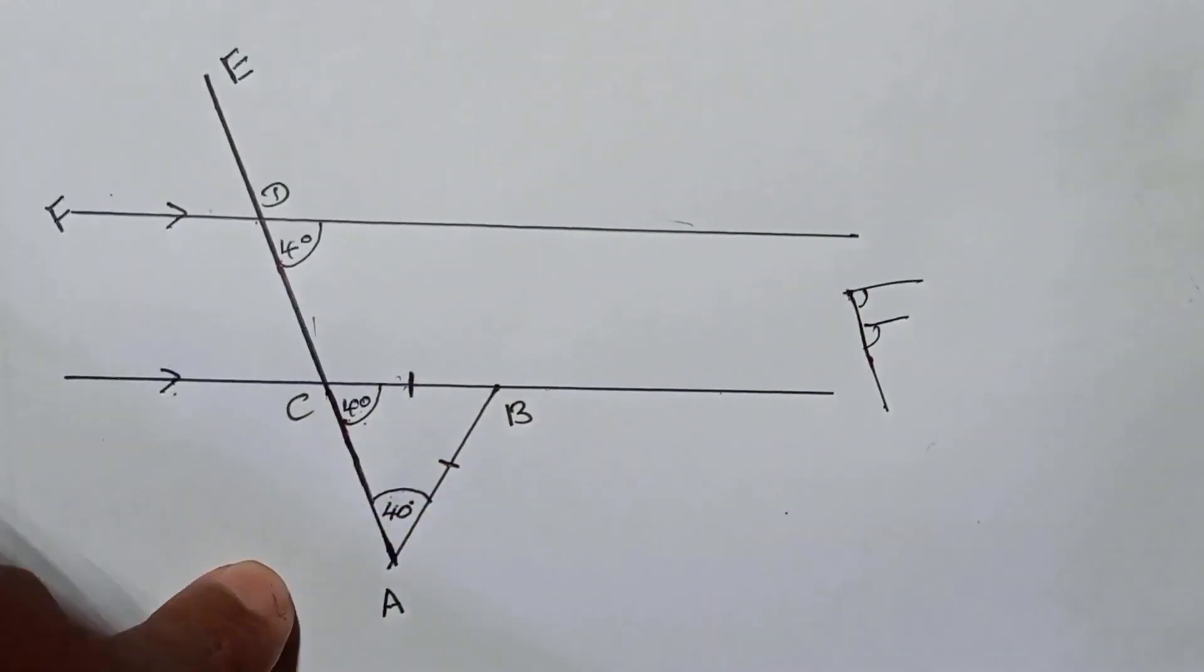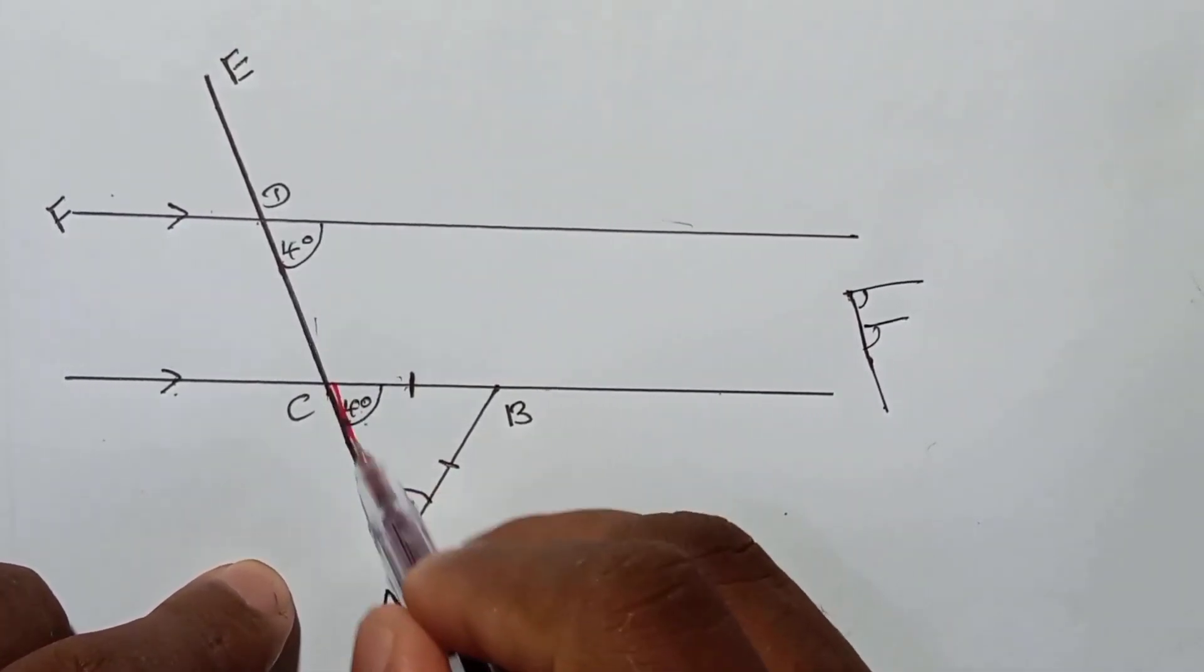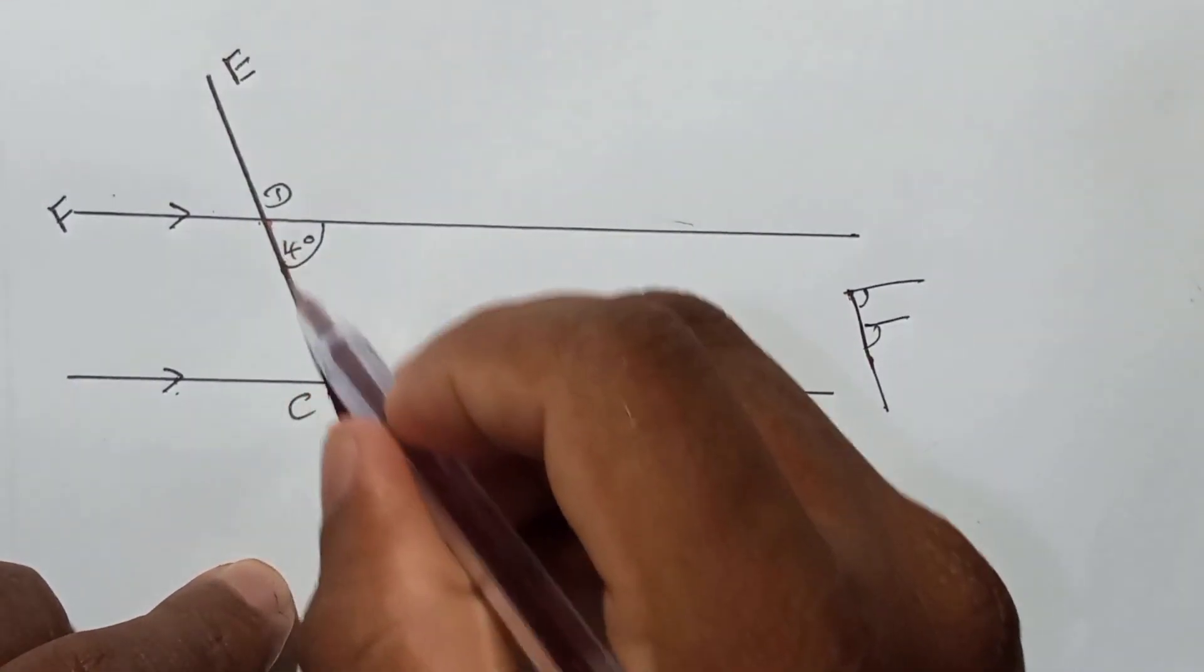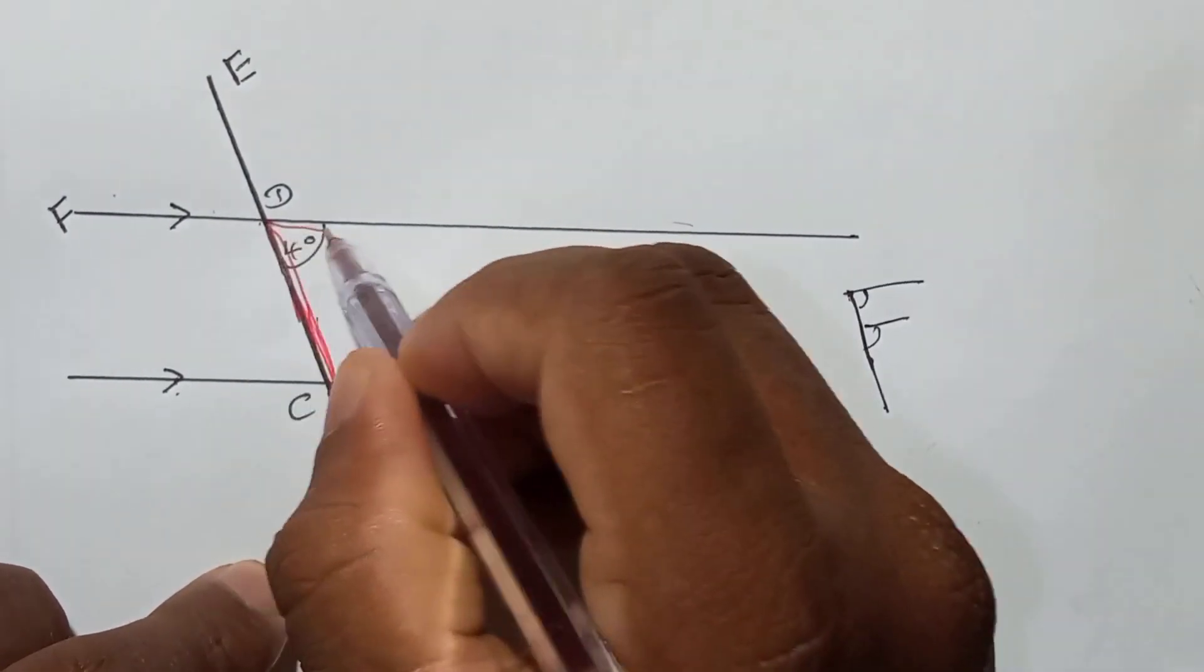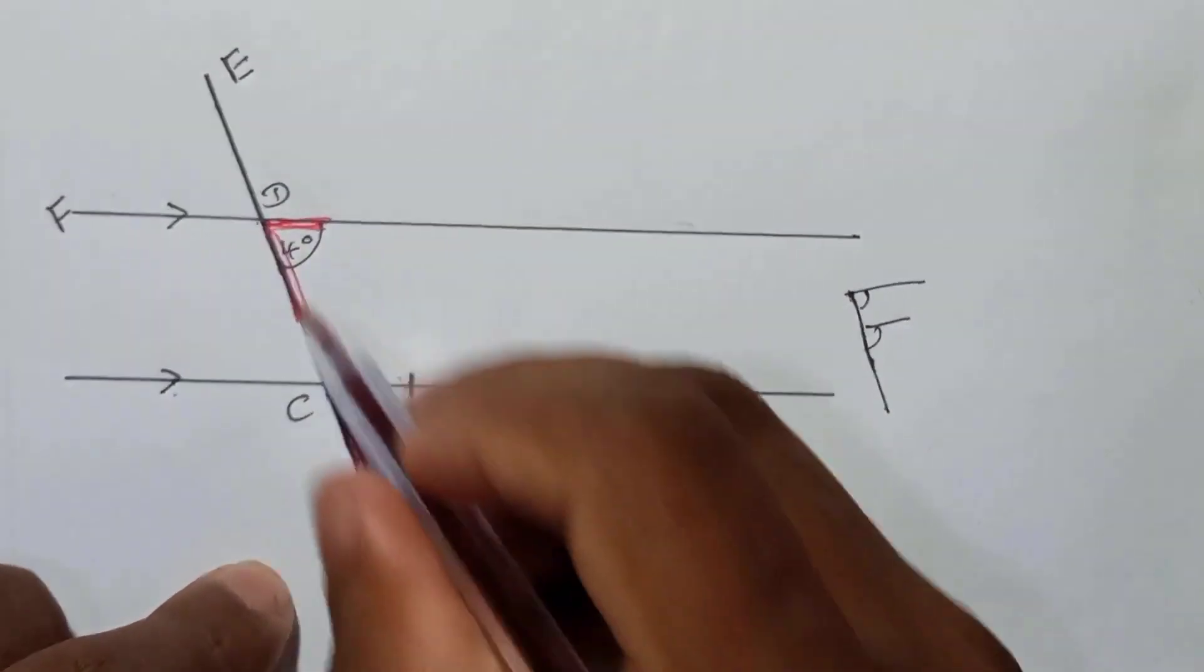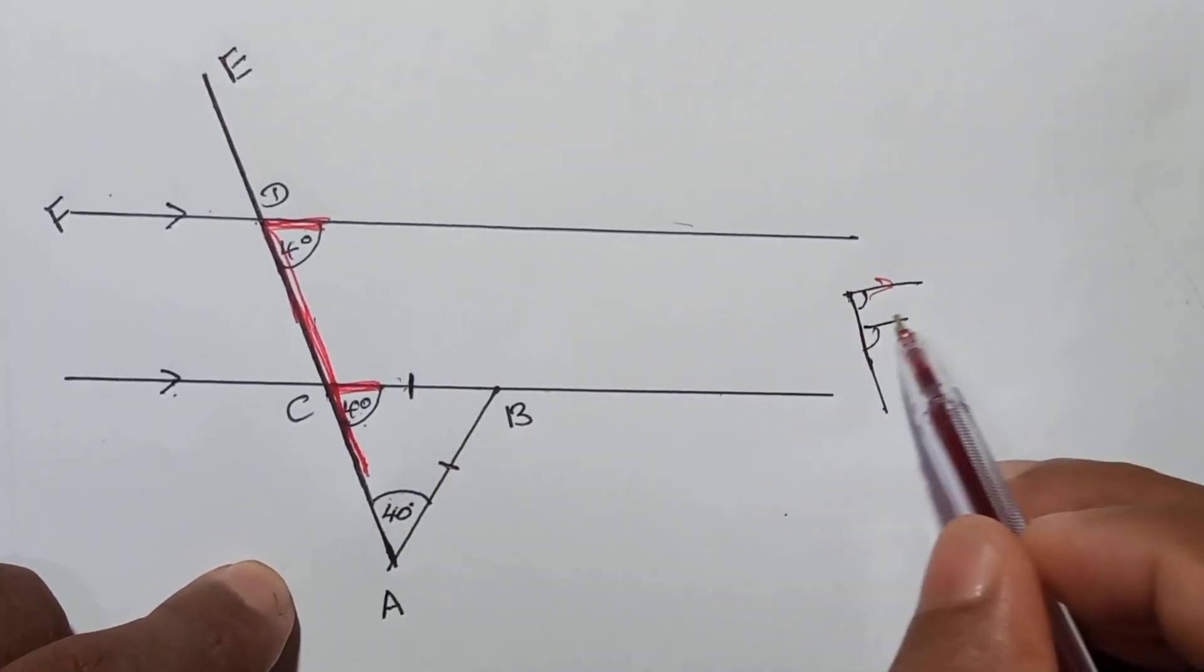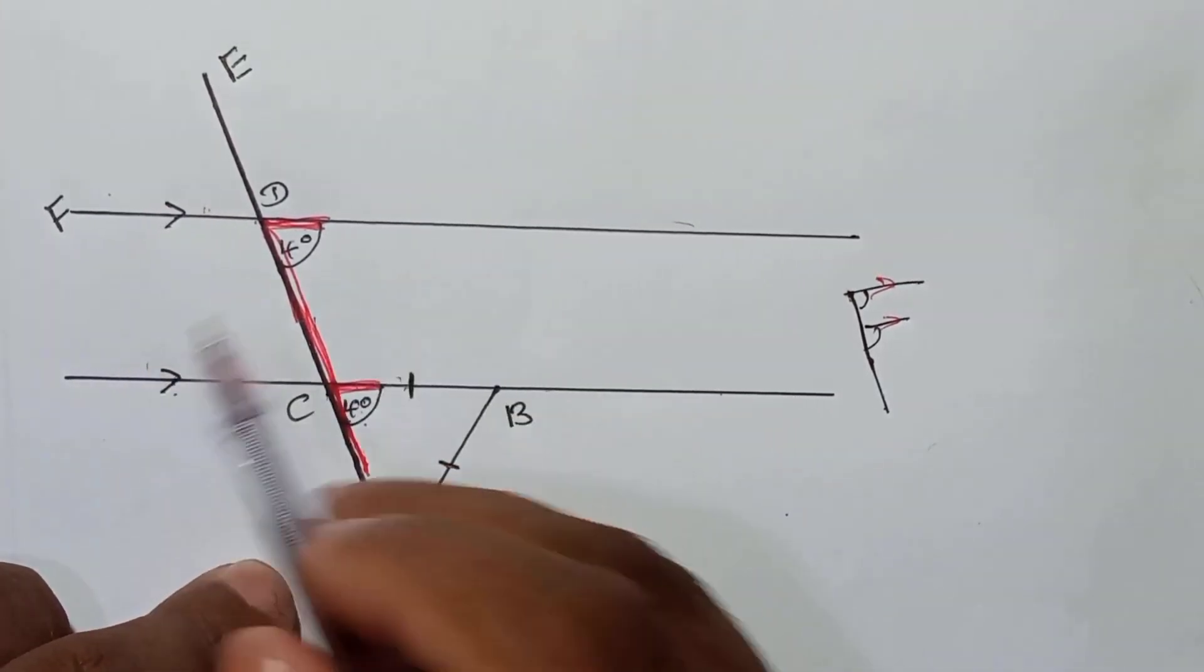If I use this angle to show you, this is 40, then this also. Look, now here if I show you like this, it must be these two lines are parallel also. You have that sign, you have that sign.